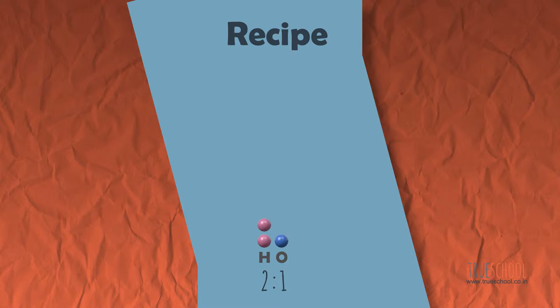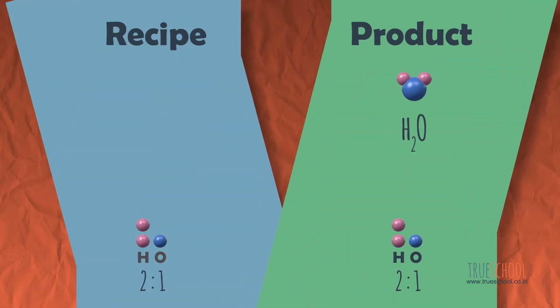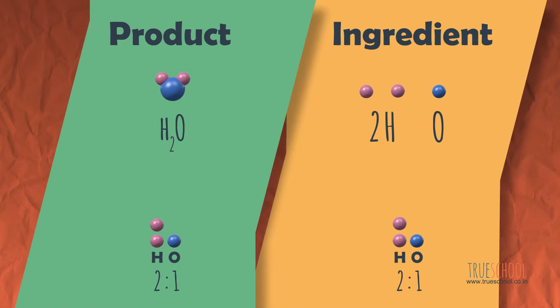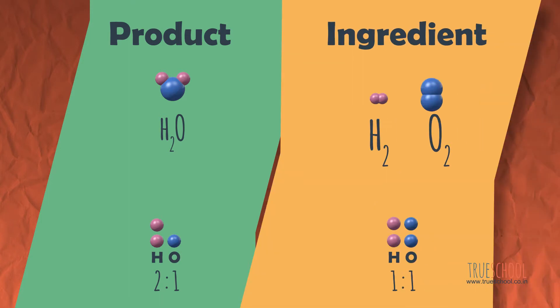Suppose this is a recipe. How will you produce a molecule of water? I will take two hydrogen atoms and one oxygen atom. Correct. But suppose you go to a shop and the chemist doesn't give you a single atom of oxygen and says oxygen and hydrogen only come in pairs. What will you do?